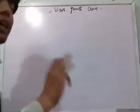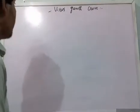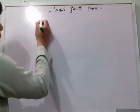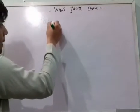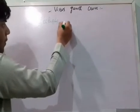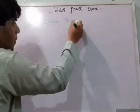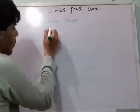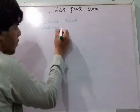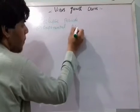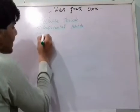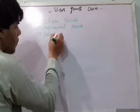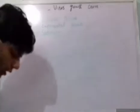The virus growth curve contains three main periods. The first period is the Eclipse period. The second is the Latent period. The third is the Stationary period. So we have three kinds of periods involved in the virus growth curve.